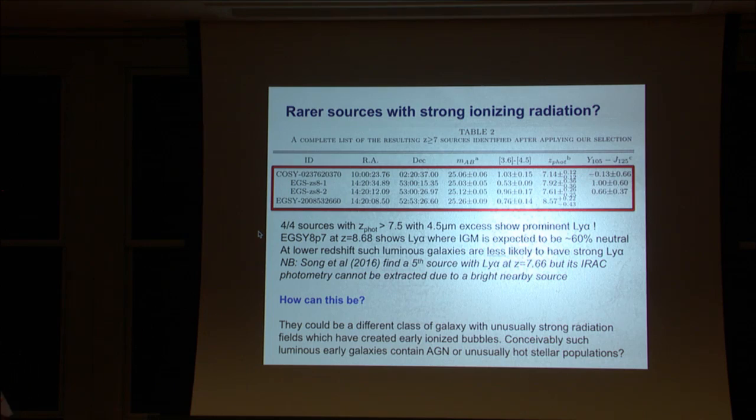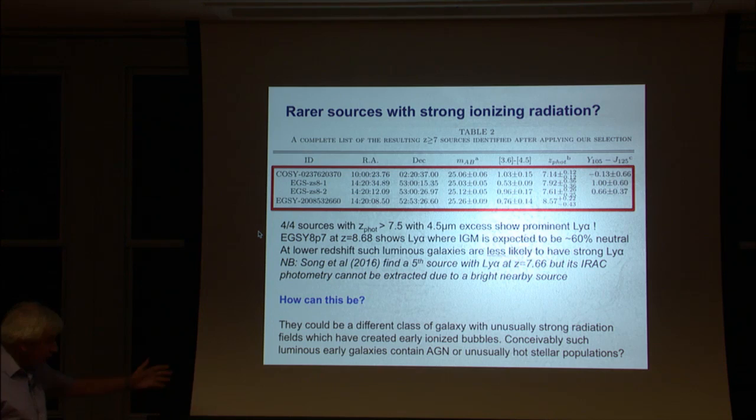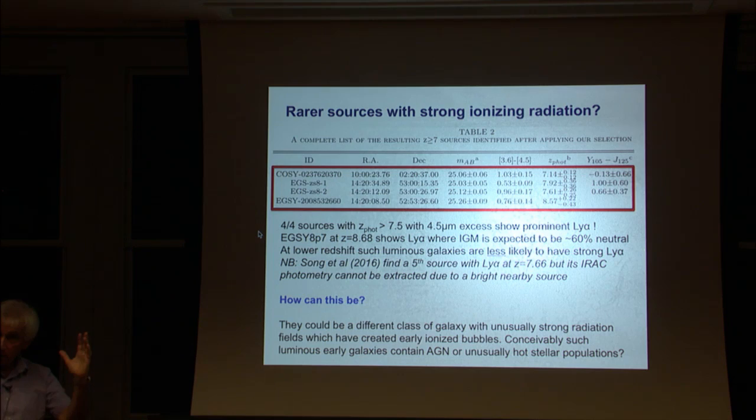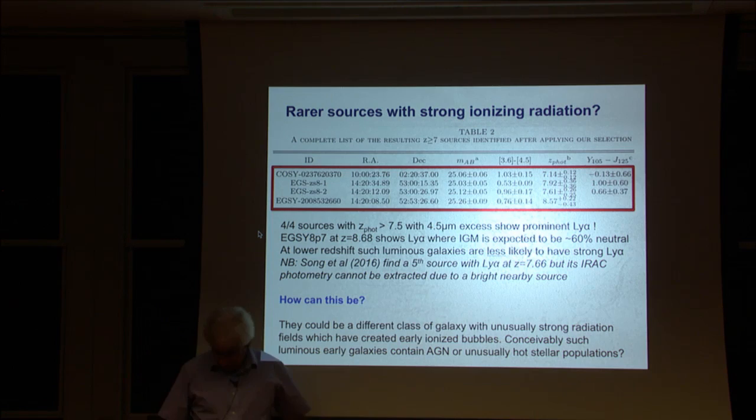This seems surprising because if our story is correct the medium should be pretty neutral at this time, especially at 8.68. You'd expect the IGM to be 60% neutral. So how can this be? Well it could be that these objects, because they're luminous and they show this intense line, it could be that they have unusually strong radiation fields, they've already created ionized bubbles at an early time, or conceivably they could have AGN or unusual stellar populations.